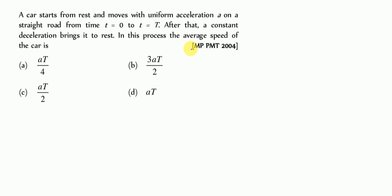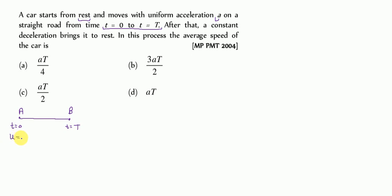This question is from the MP PMT 2004 exam. A car starts from rest and moves with uniform acceleration 'a' on a straight road from time t = 0 to t = T. The initial point is A and the final point is B. The initial velocity is 0 and we need to find the final velocity at point B.